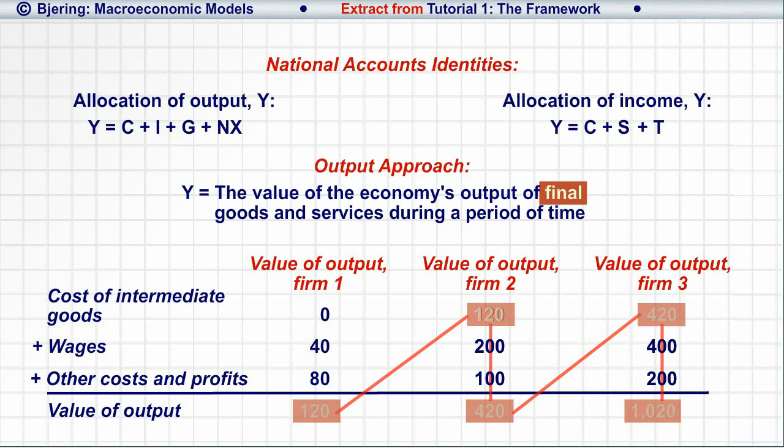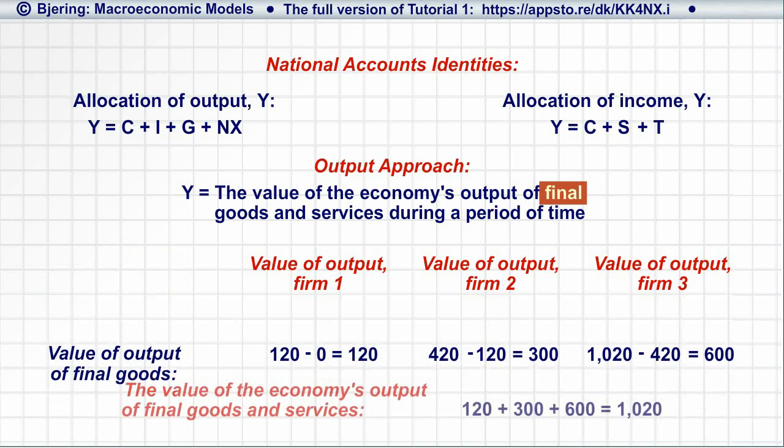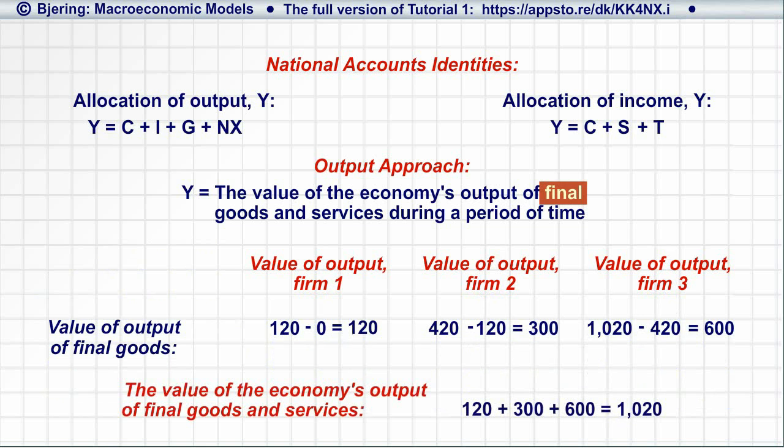Consequently, we subtract each firm's cost of intermediate goods from its value of output to get the economy's total value of output of final goods and services.